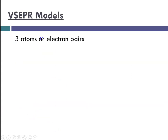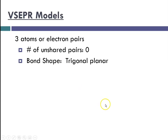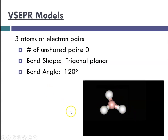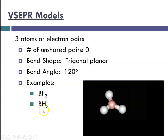If we have three atoms or electron pairs with no unshared pairs, the bond shape would be trigonal planar. The three things are getting as far apart from one another as they can, so the bond angle would be 120 degrees. Examples would be boron trifluoride, boron trihydride, and sulfur trioxide.